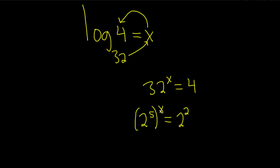Now we can use properties of exponents. 5 times x is 5x. So this is 2 to the 5x. This is equal to 2 to the 2.